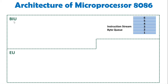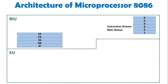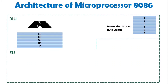The second part of the BIU contains segment registers. Microprocessor 8086 has four segment registers: Extra Segment, Code Segment, Stack Segment, and Data Segment. The BIU also has an Instruction Pointer, which points to the address of the next instruction to be executed. The Bus Interface Unit is responsible for identifying the physical address of memory.